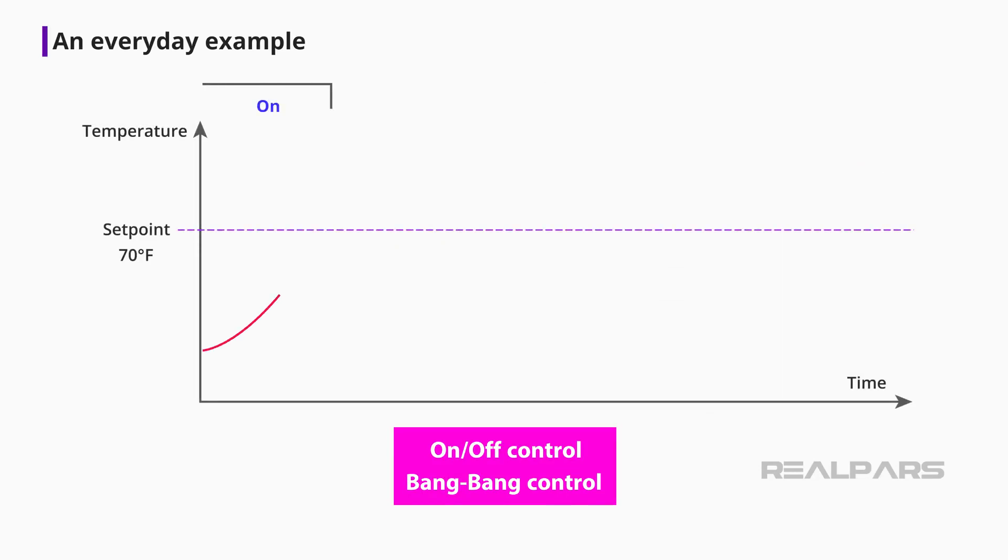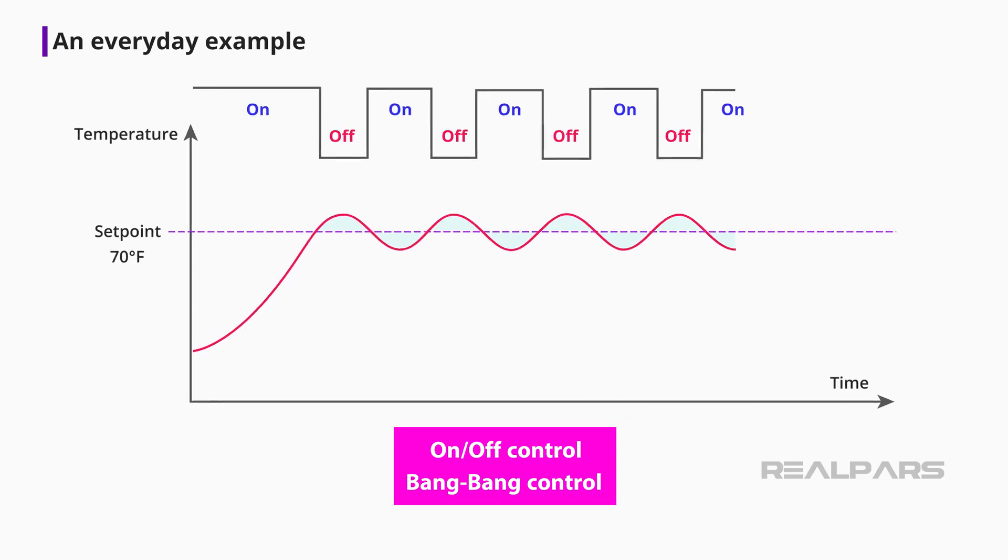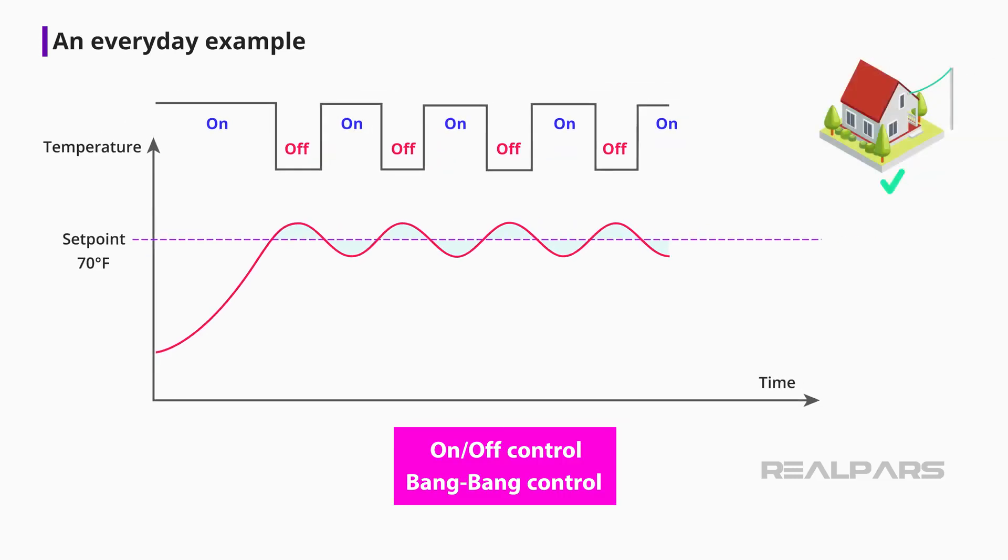Here is a plot of what the room temperature does over a period of time as the furnace turns on and off. As you can see, the temperature is not exactly held at the setpoint of 70 degrees Fahrenheit, but cycles above and below the setpoint. On-off control may be okay for your house, but it is not okay for industrial processes or motion control.